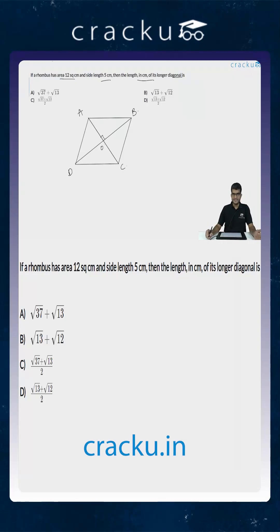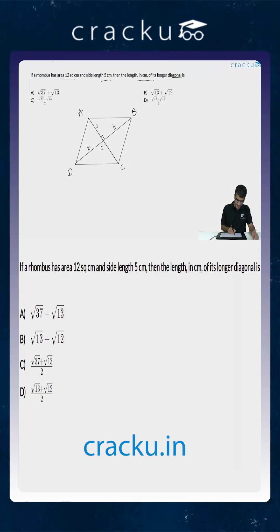Let us assume that the longer diagonal is BD. So let DO = b and BO = b as well. Let AO = a and CO = a. We know that each side of the rhombus is 5 centimetres.